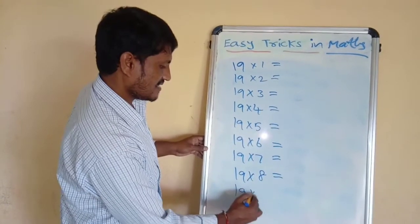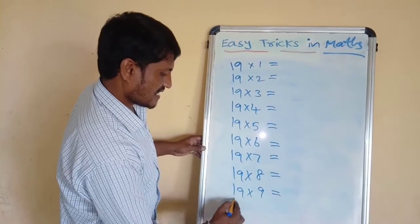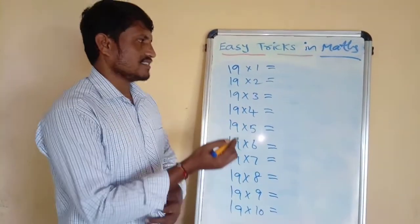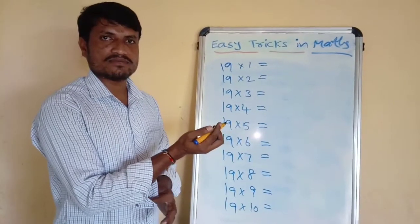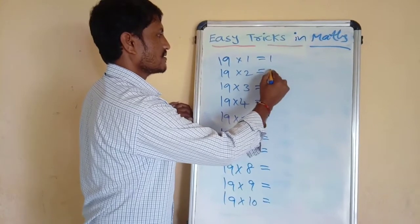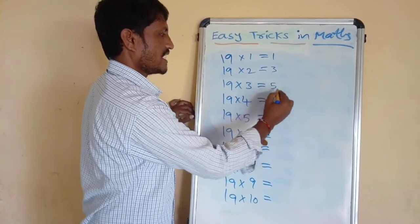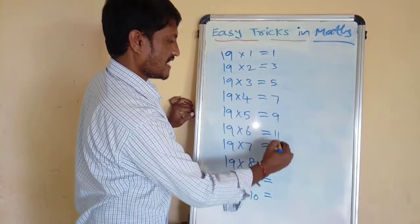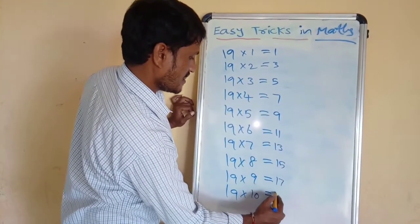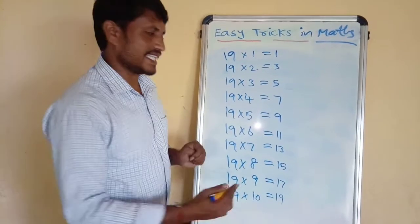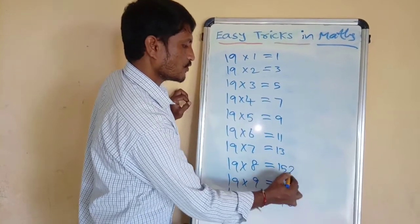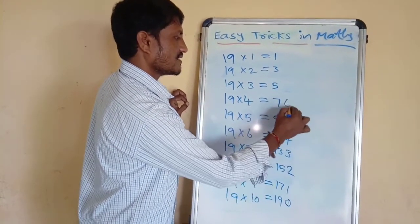19 9s are, 19 10s. In this, we basically write the tens digits as odd numbers: 1, 3, 5, 7, 9, 11, 13, 15, 17, 19. And again we write the units digits from bottom to top: 0, 1, 2, 3, 4, 5, 6.